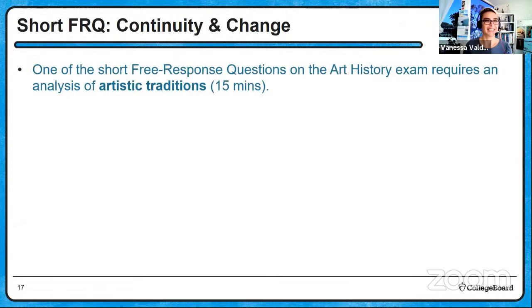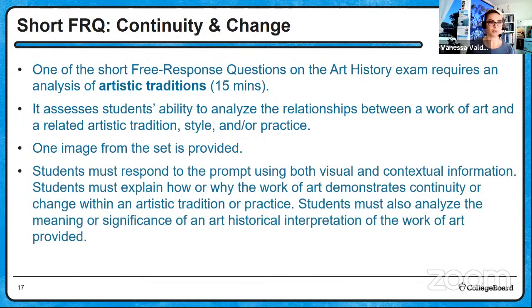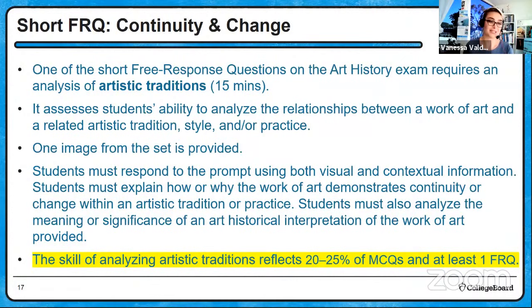We're going to take a look at the short FRQ on continuity and change today. One of the short free response questions on the art history exam requires an analysis of artistic traditions — this is written in 15 minutes. It assesses students' ability to analyze the relationships between a work of art and a related artistic tradition, style, and/or practice. One image from the set is provided, and students must respond using both visual and contextual information. Students must explain how or why the work demonstrates continuity or change within an artistic tradition or practice. The skill of analyzing artistic traditions reflects 20 to 25 percent of multiple choice questions and at least one FRQ.